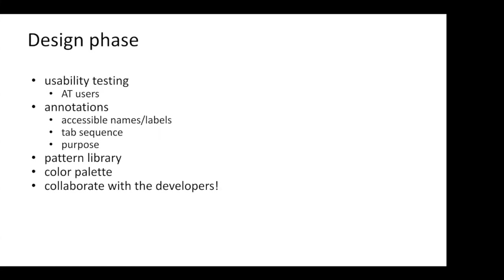We're going to cover annotations specifically around accessible names, labels, tab sequence, reading order, and purpose of the element. Part of the design phase that I think is really important is having a pattern library — a bunch of reusable components at your fingertips. If those patterns and components have accessibility baked into them, your job is a lot easier. You also need to take color contrast into consideration, because if you don't, your available colors may not be contrasting enough, causing problems for certain users.